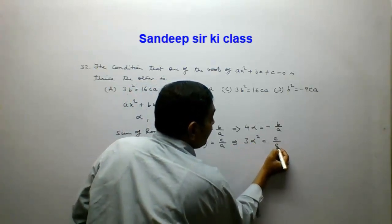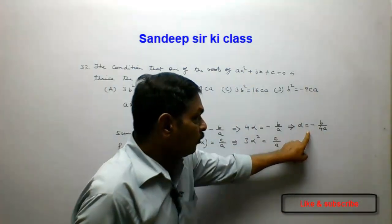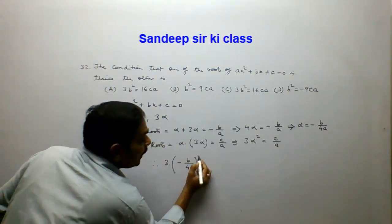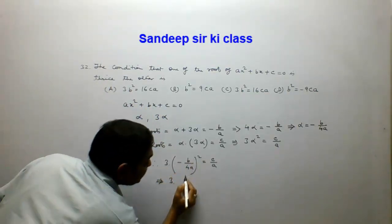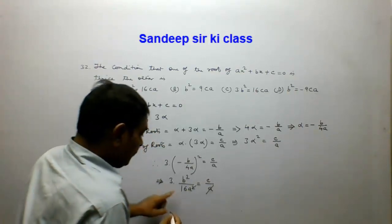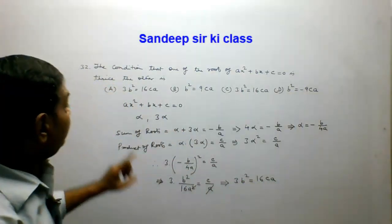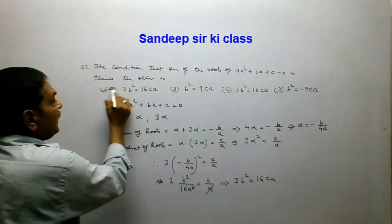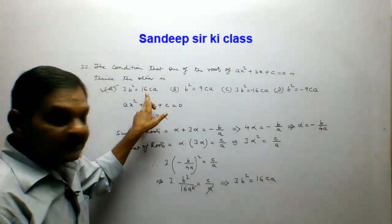From the sum equation: 4·alpha equals minus b over a, so alpha equals minus b over 4a. Substituting into the product equation: 3·(minus b over 4a) squared equals c over a. This gives 3·b squared over 16·a squared equals c over a, and cross-multiplying gives 3b squared equals 16ac. Option A is the correct answer.